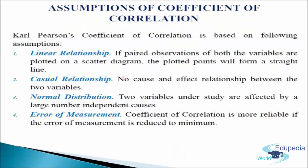Next, we come to the assumptions of coefficient of correlation. Carl Pearson's coefficient of correlation is based on the following assumptions. First, linear relationship: it is assumed that there is a linear relationship between the variables — that is, if the paired observations of both variables are plotted on a scatter diagram, the plotted points will form a straight line. Next, casual relationship: there is no direct cause and effect relationship between the two variables under study; however, there exists a cause and effect relationship between the forces affecting the two variables. Correlation is meaningless if there is no such relationship.